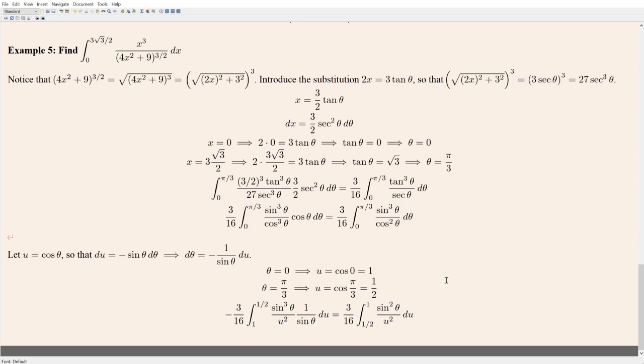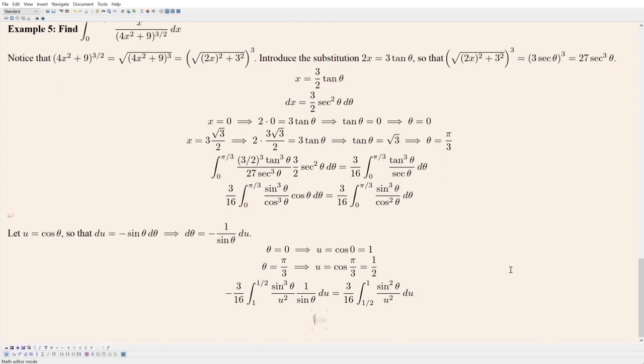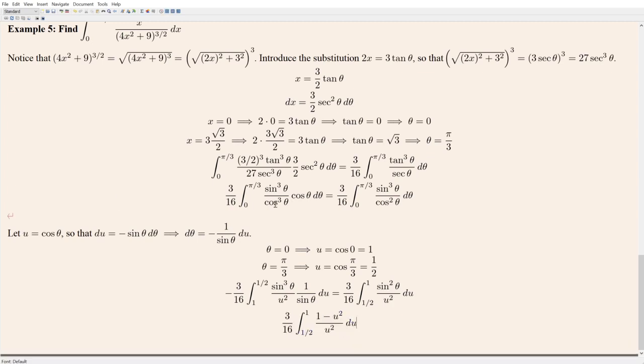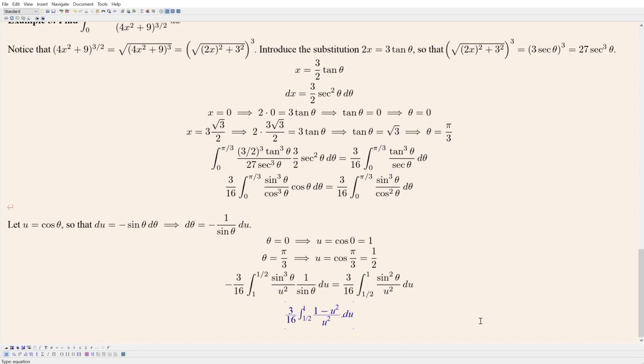And we have du left over. We still need to get rid of this sine squared, but we can do that easily enough because we have a Pythagorean identity. So we can write that as one minus cosine squared. But cosine is the same as u, right? So that becomes one minus u squared. And now finally we are in a position where we can divide both of these guys by u squared and then hit it with the power rule.